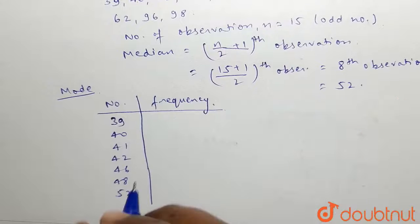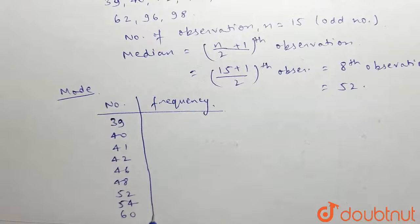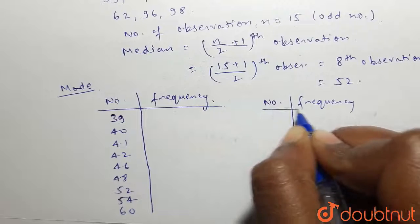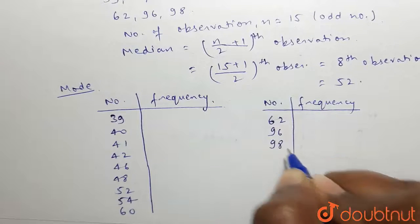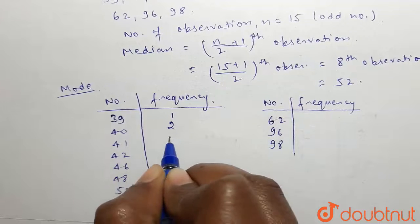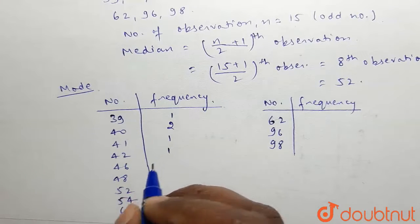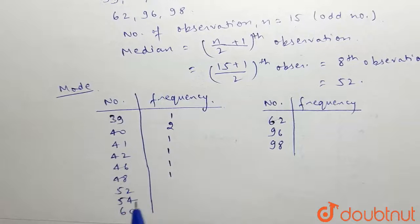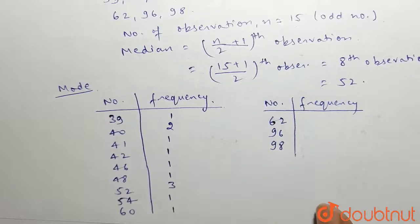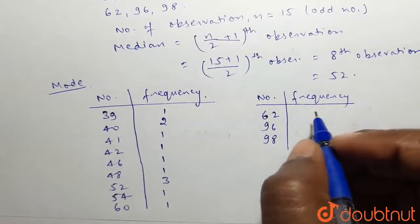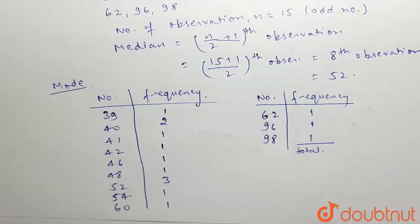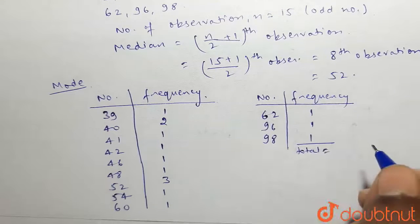Then 54, then 60, 62, and 96 occurs one time. 62 occurs one time.